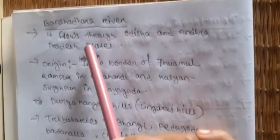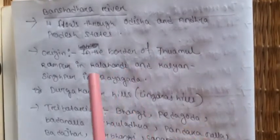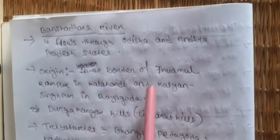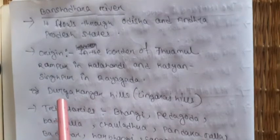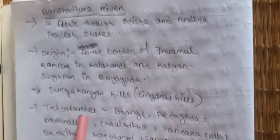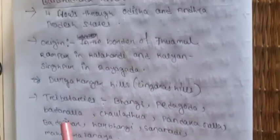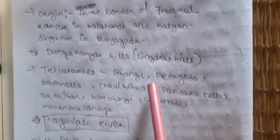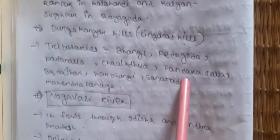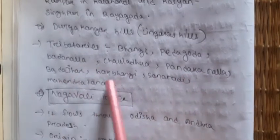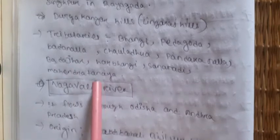Bangshadara river flows through Odisha and Andhra Pradesh. Its origin is at the border of Thuamul Rampur in Kalahandi and Kalyansinghpur in Rayagada — also called Durga Ganga Hill or Lingarachil. Its tributaries include Bangi, Petagoda, Boda Nala, Chaul Dhuya, Pandaka Nala, Boda Jhar, Harbangi, Sanna Nadi, Mohendra, and Tonaya.